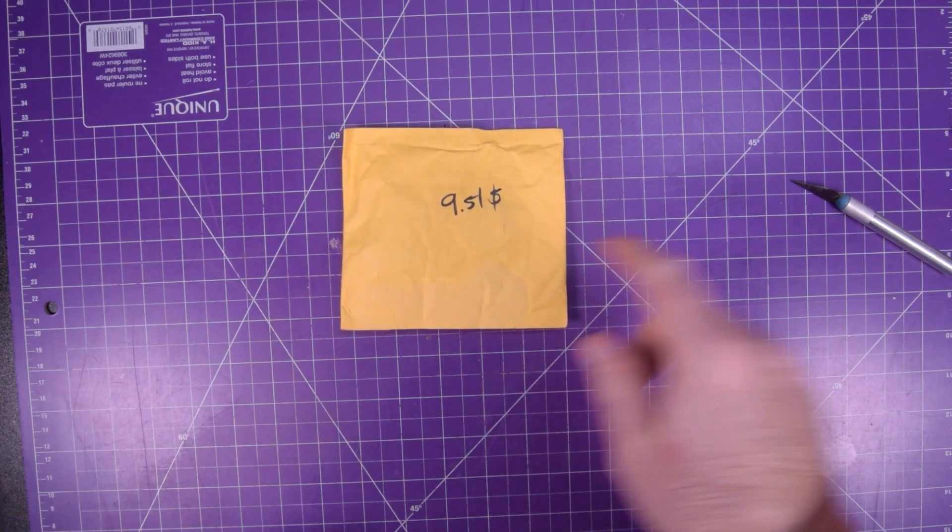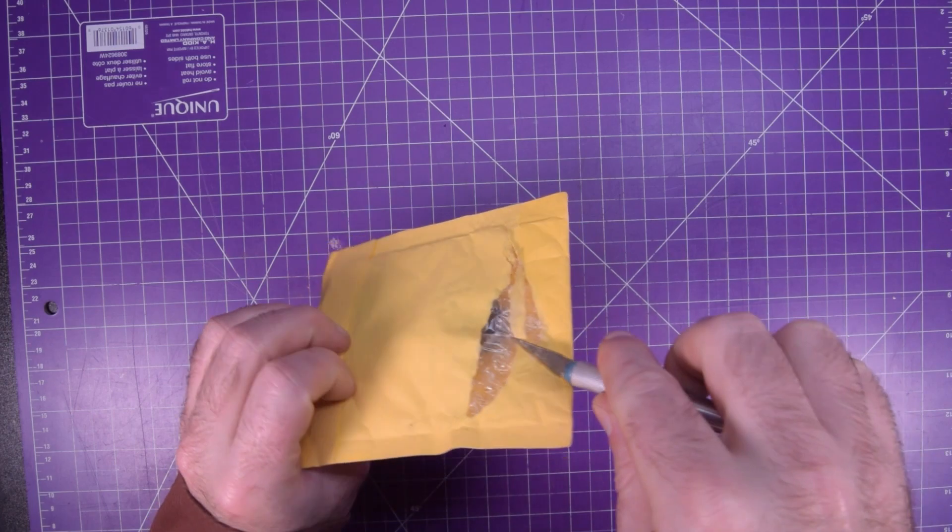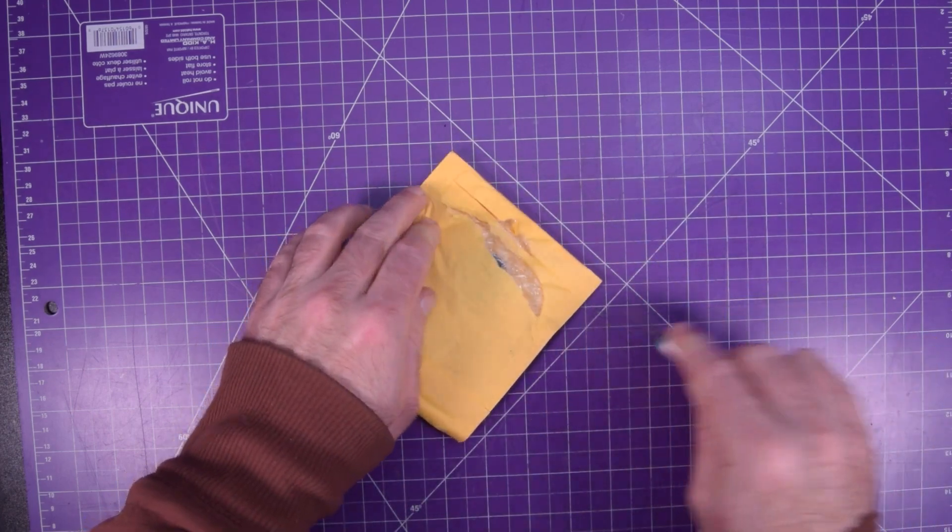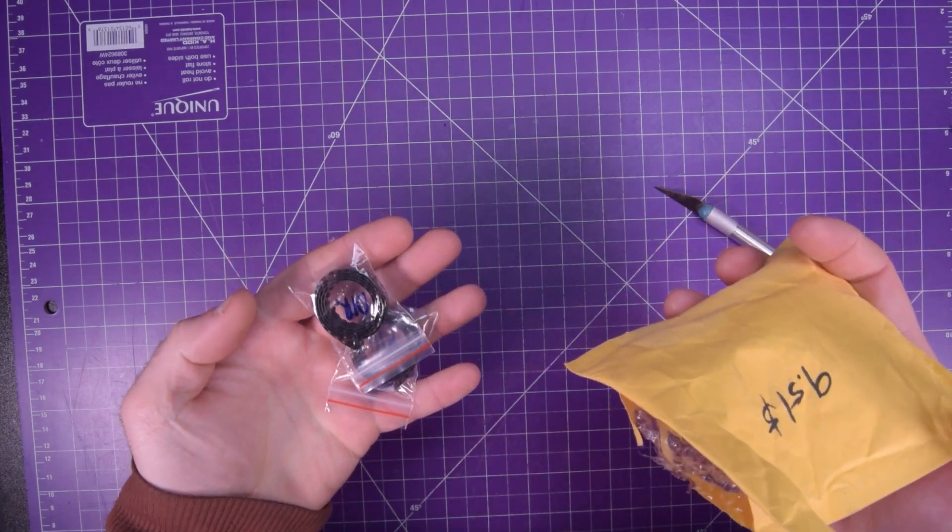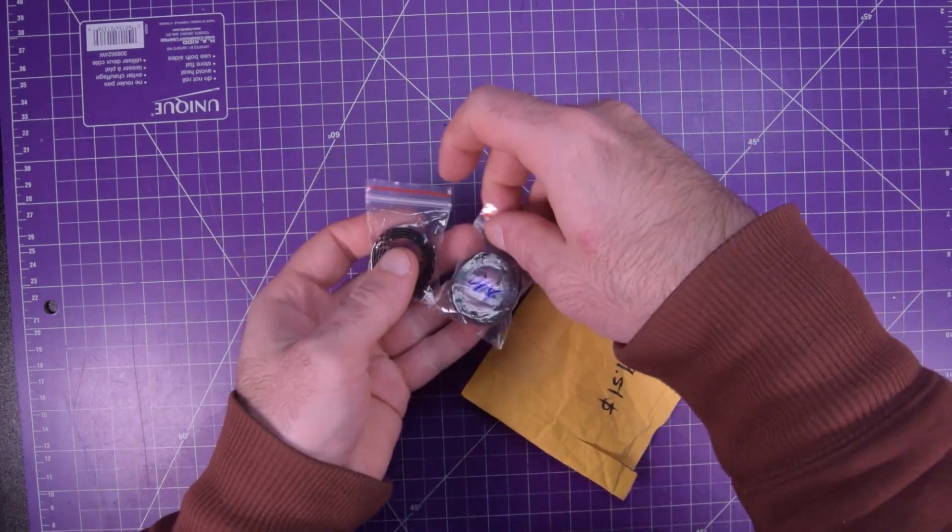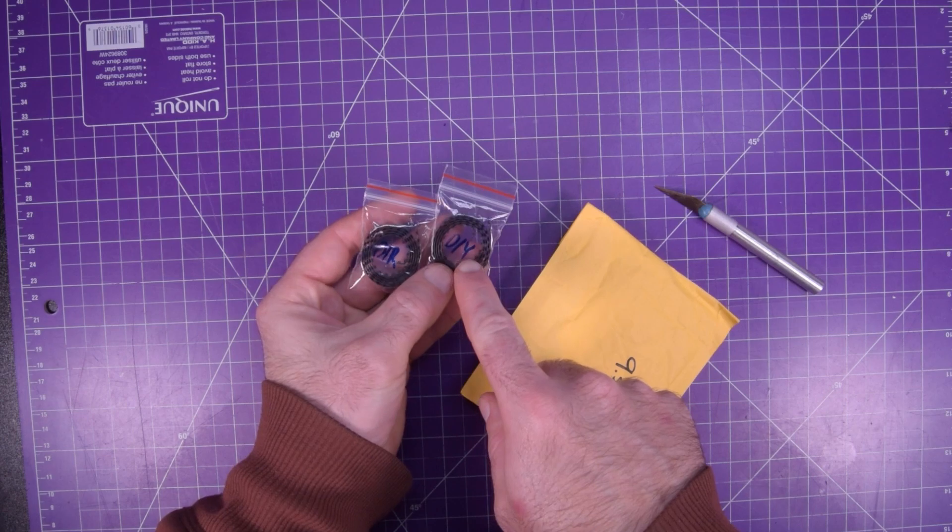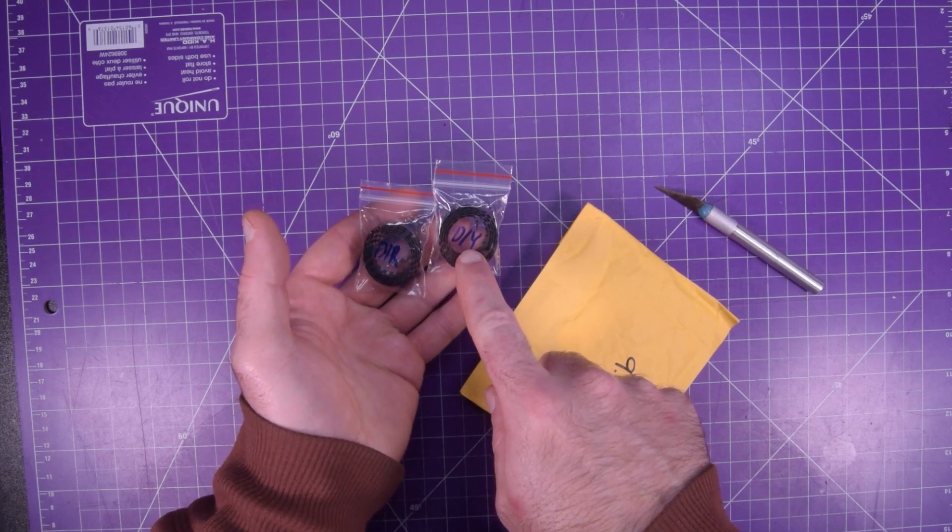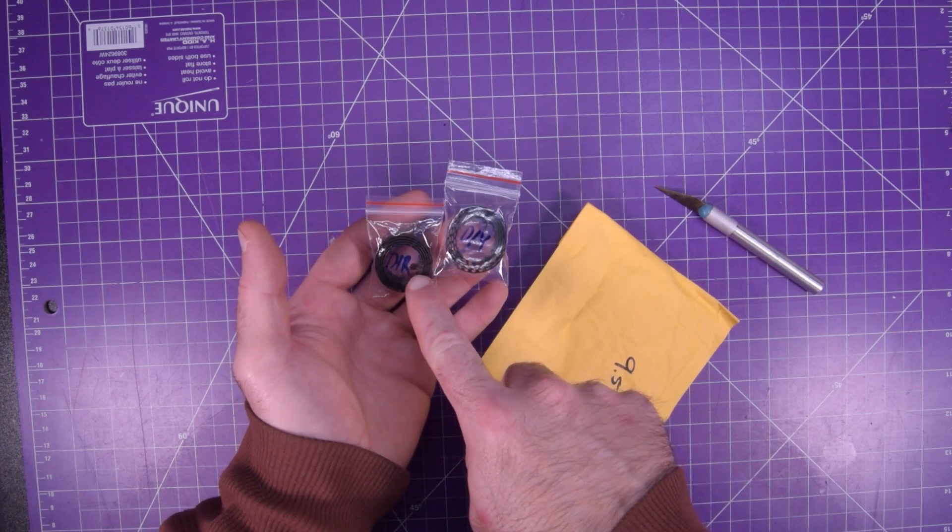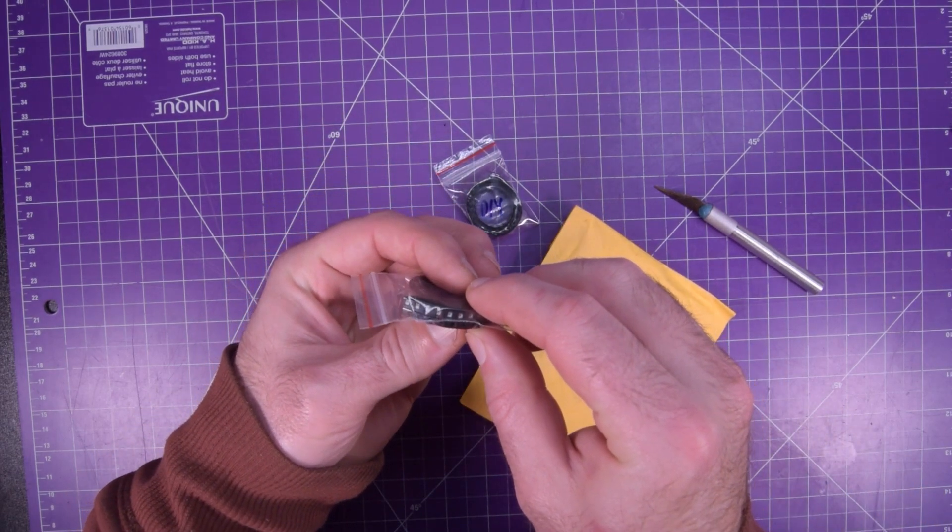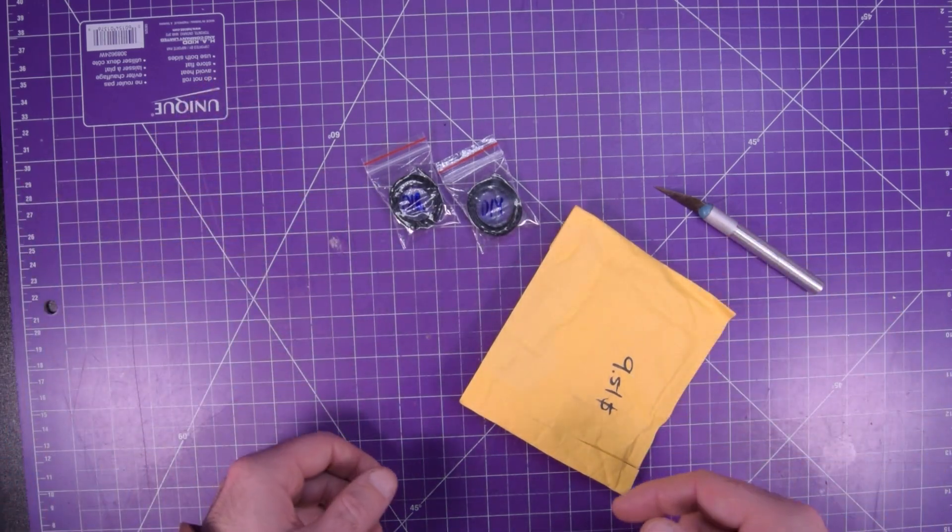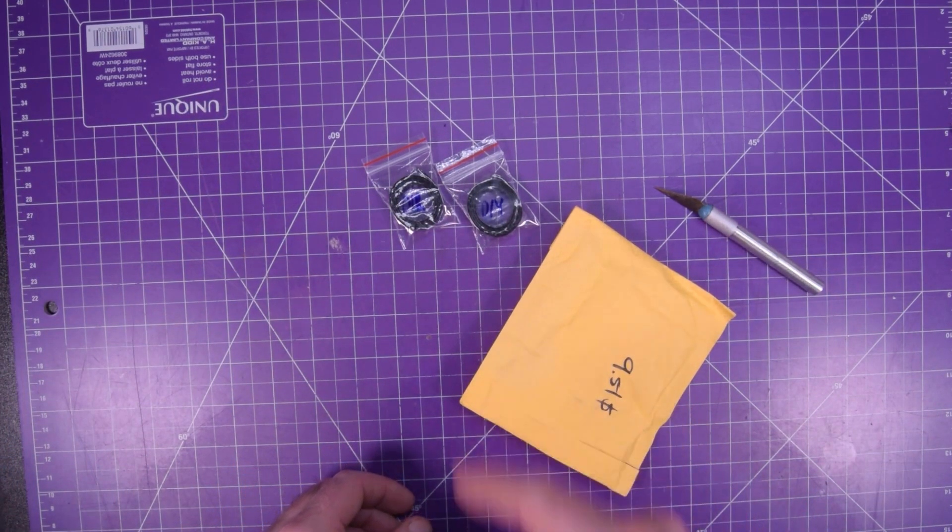On to the next one. Next one up is this one here, $9.51. I took the label off, and I kind of saw that it's a reel. This one says D-I-Y, and this one says D-I-R. They're definitely, they look like LEDs. I guess I'm going to have to zoom you in so we can check it out together.